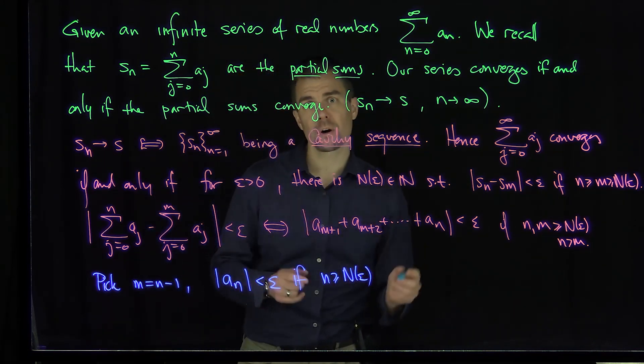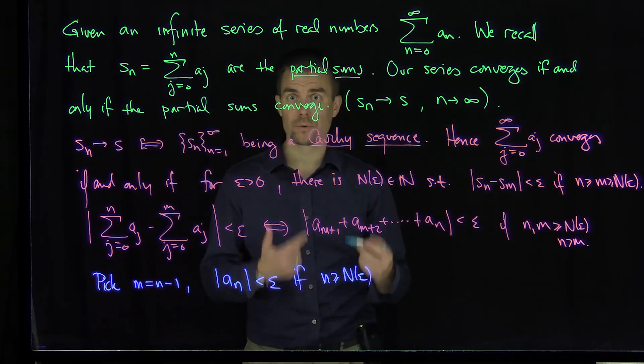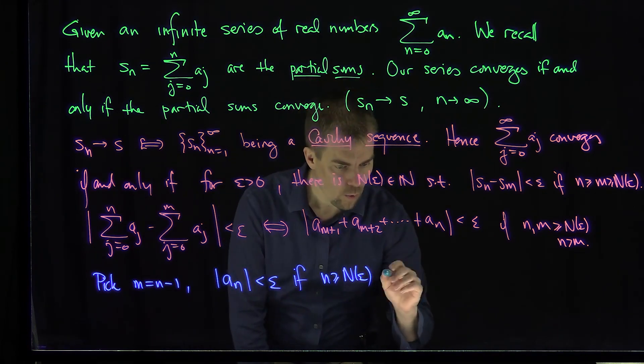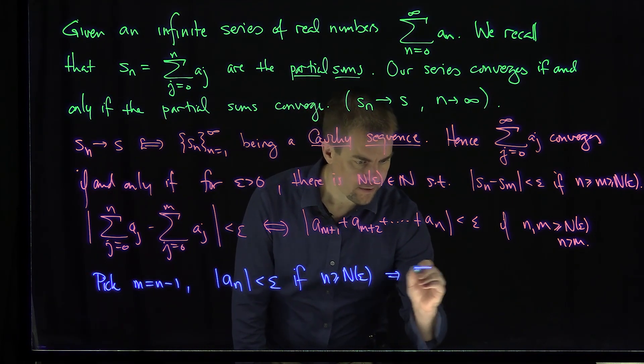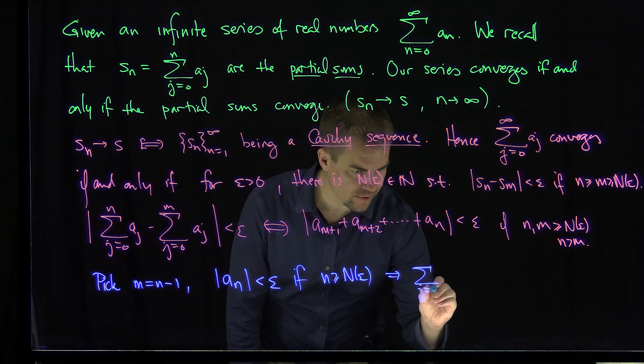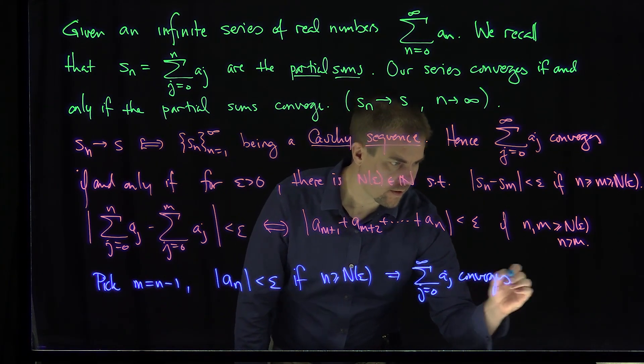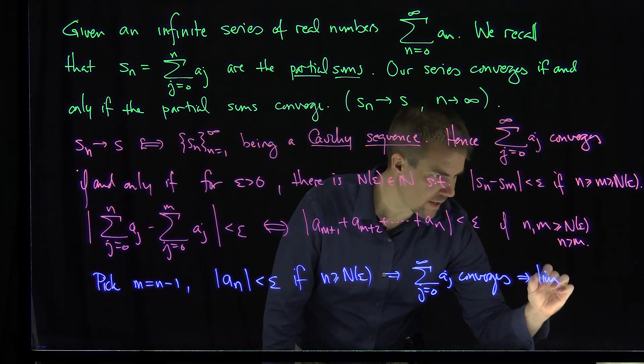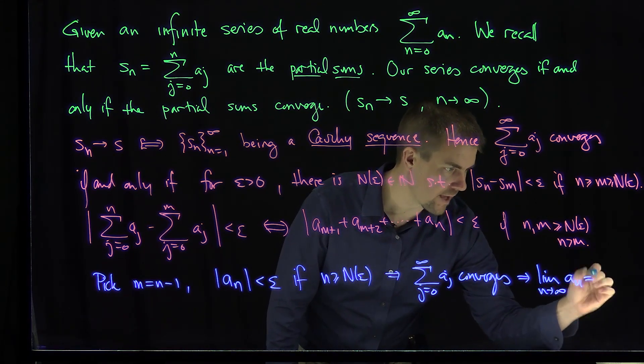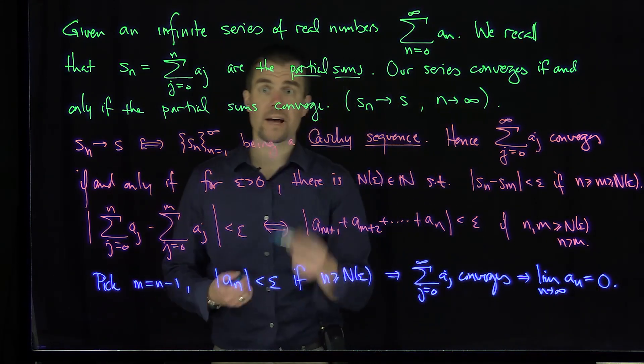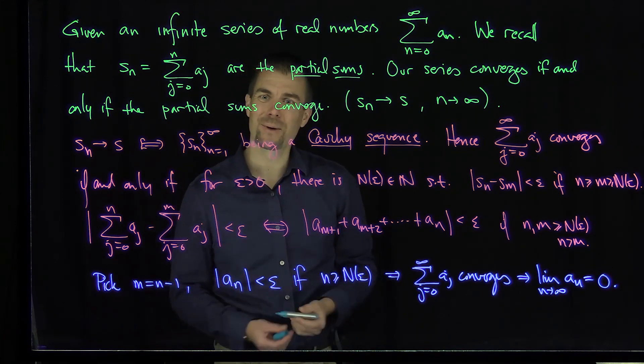And this exactly says that the nth term in a convergent series has to go to 0 as n goes to infinity. So what we get from this is that if the series j goes from 0 to infinity of a_j converges, this forces the limit as n tends to infinity of a_n, the nth term in the sequence, to be zero exactly by this Cauchy criterion. Thank you very much.